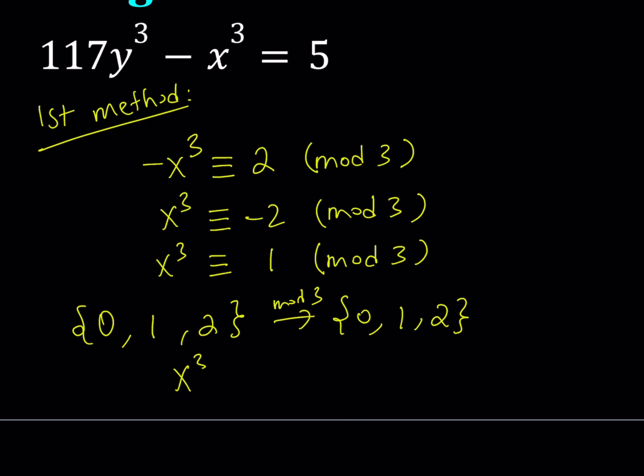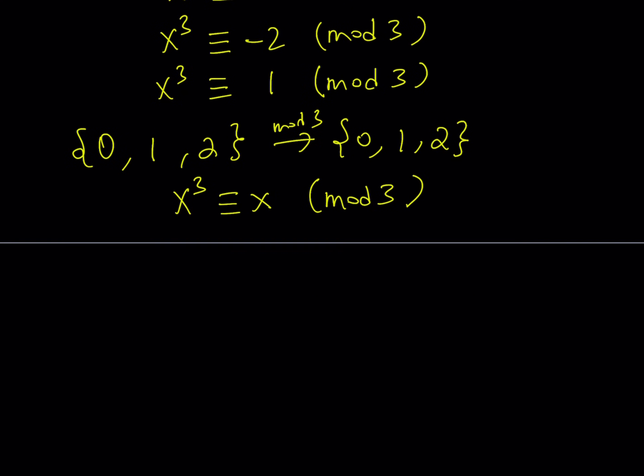In other words, we can safely say that x³ is always congruent to x mod 3. Since we have an equation that is congruent to 1, x³ is congruent to 1 mod 3 implies x is congruent to 1 mod 3.